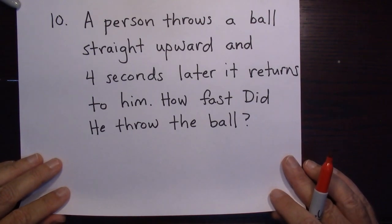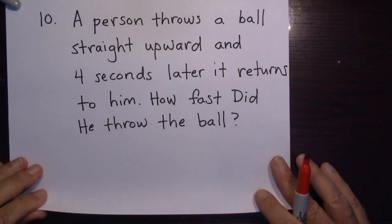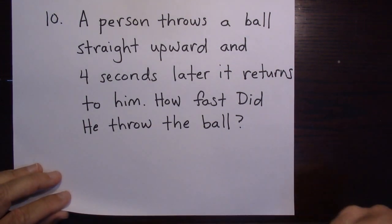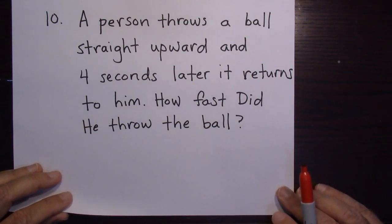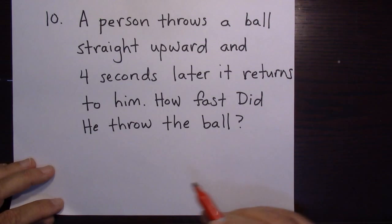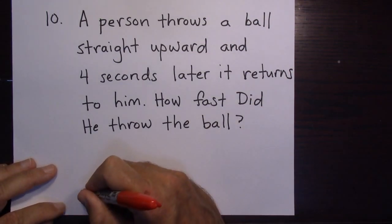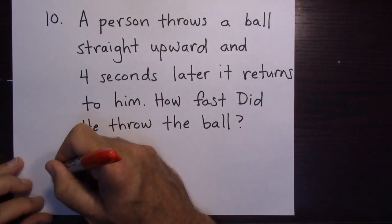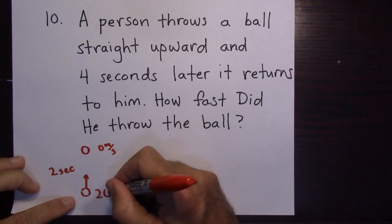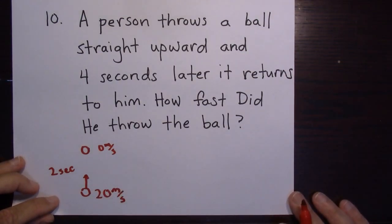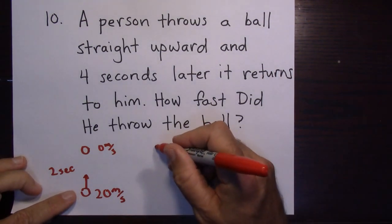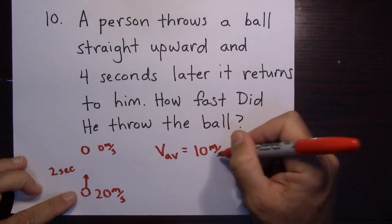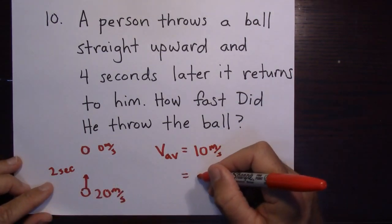Problem ten: a person throws a ball straight up and four seconds later it returns to him. How fast did he throw it? If the total time is four seconds, it took two seconds up and two seconds down. At the top, velocity is zero, and it took two seconds to get there losing 10 m/s each second — so it was thrown at 20 meters per second. The average velocity on the way up is 10 m/s, and over two seconds it reached 20 meters in the air.